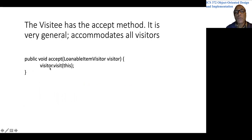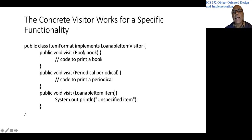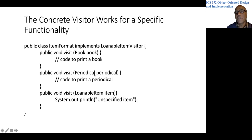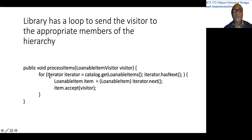Whatever the visitor is, it calls the visit method. If it is a Book object, it will end up in the book visit method and that book will be printed. If it was a Periodical, it would have called the periodical visit method and printed the periodical. And that is it. If you put this processItems method in the Library class, it can be called from the user interface, passing any LoanableItemVisitor.